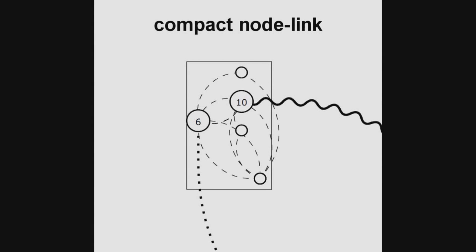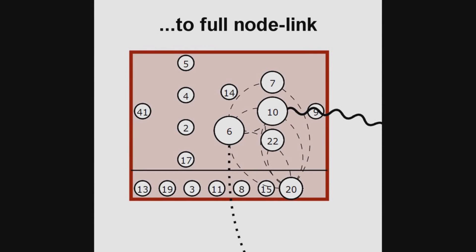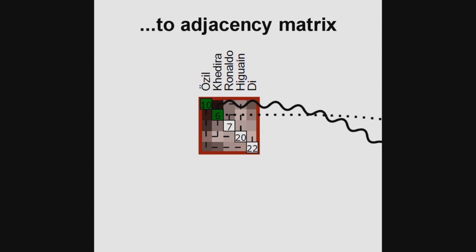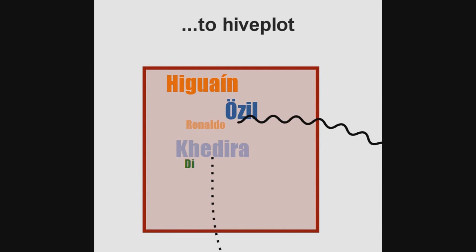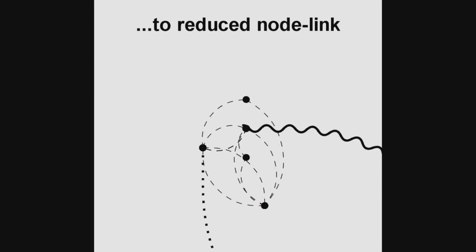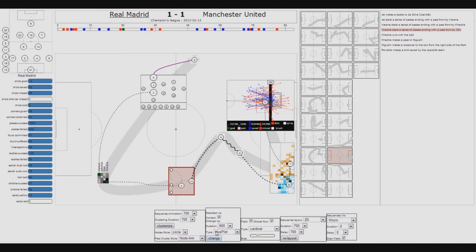Once a faceted view is built, it is possible to switch to another faceted view. Animations try to preserve the node's visual consistency, and each facet stylizes the nodes and links according to the facet's characteristics. Each faceted view has its pros and cons. The analyst can then switch from one visualization to another according to their task — for example, depending on the spatial position of action, the chronological order of events, or the frequency at which a player appears within a series of passes.